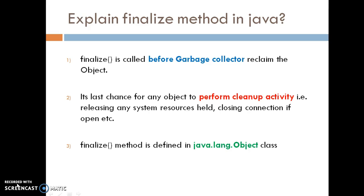Before going to the finalize method, we will see where exactly the finalize method is defined and what is its purpose. The finalize method is defined in the Object class. Whenever we need to use it, we have to override the finalize method from the Object class and call the superclass finalize method using super.finalize().